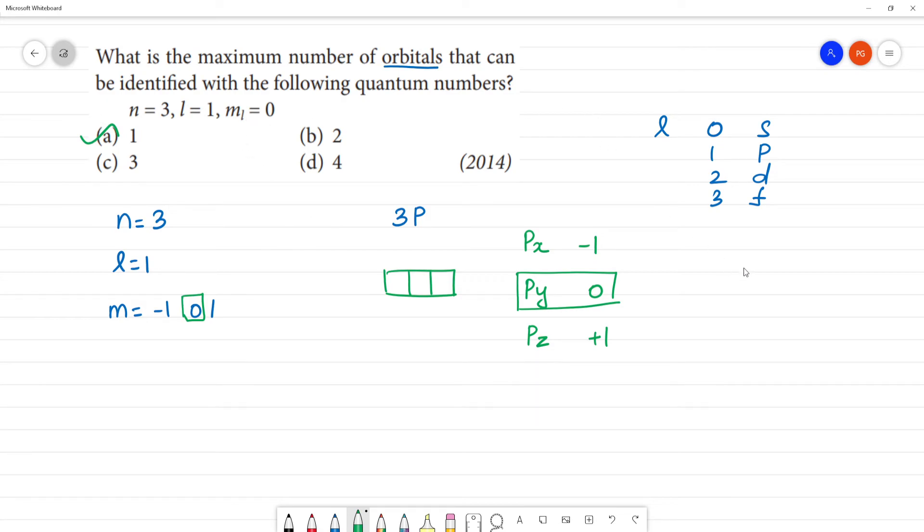Similarly m is equal to, m is equal to plus 1, how many orbitals? One orbital. Similarly m is equal to minus 1 value, how many orbitals? One orbital.